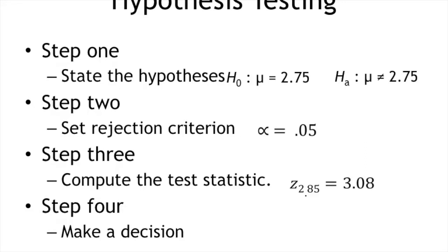So I now know that my sample, the mean of it, is more than 3 standard deviations from the mean in the sampling distribution, way out in the tails.